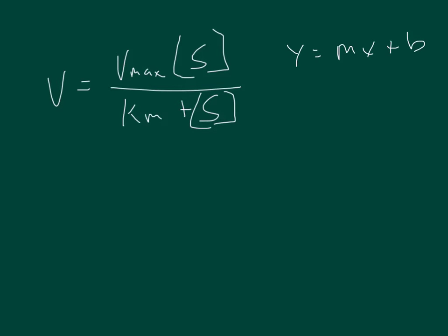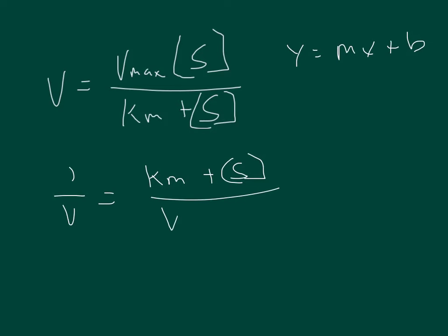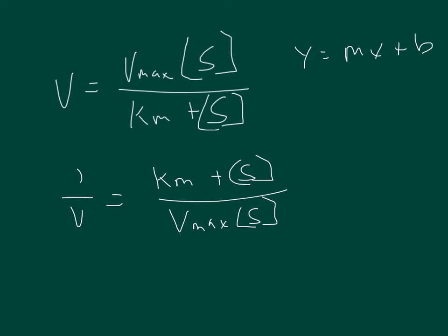We're going to take the reciprocal of both sides, which makes 1 over the velocity equal to the Michaelis constant plus the substrate concentration divided by Vmax times the substrate concentration. Because the numerator of this equation has a plus, we can break it out as long as we have the same denominator.